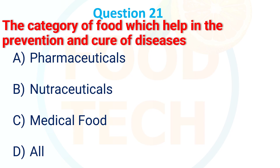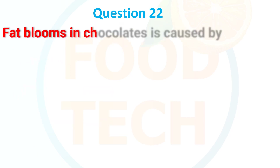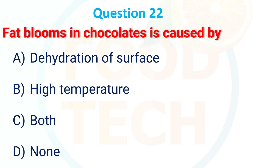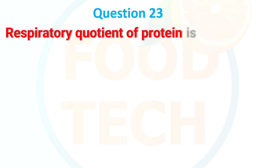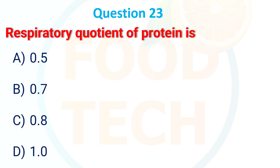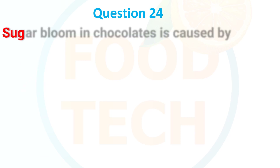a) pharmaceuticals, b) nutraceuticals, c) medical food, d) all. The answer is nutraceuticals. Fat bloom in chocolate is caused by: a) dehydration of surface, b) high temperature, c) both, d) none. The answer is high temperature. Isoelectric point of protein is: a) 0.5, b) 0.7, c) 0.8, d) 1.0. The answer is 0.7.